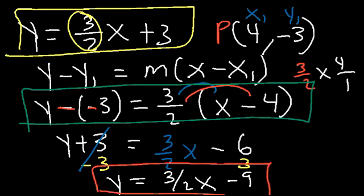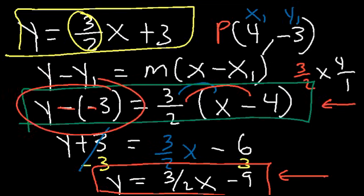If you use the method from the first two examples, you should get the same answer. In point-slope form, it's y plus 3 equals what's on the right side — just a different way of expressing the same equation.